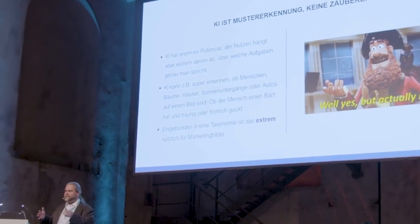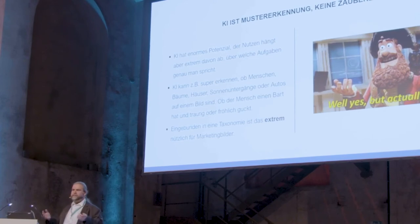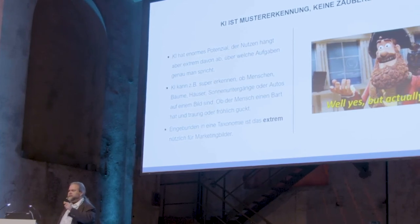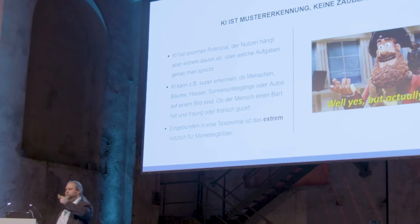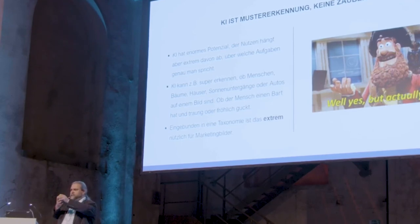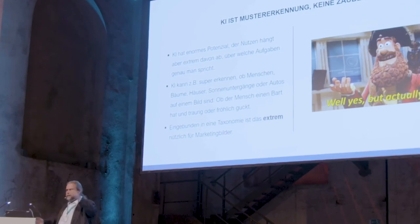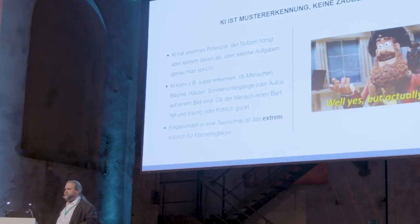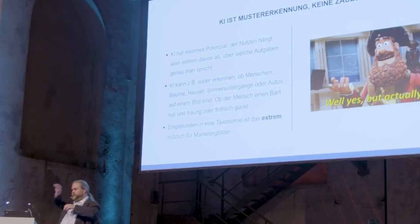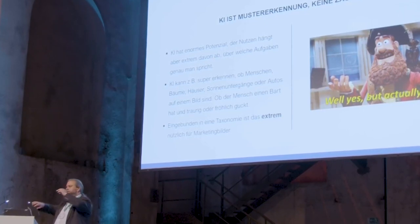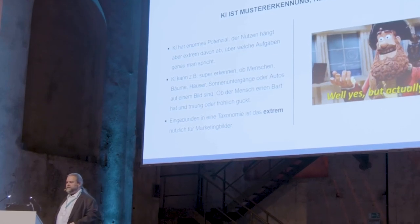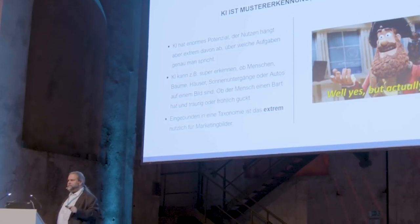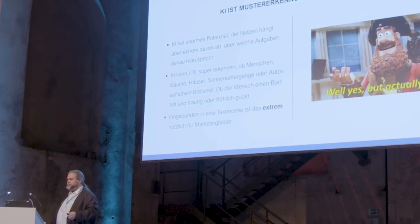Depending on what I want to do, AI can be great or not that great. Google Vision, for instance, is fantastic — it can tell me this is an image of a tree with a couple underneath and the guy is smiling and has a beard. If you put it into a taxonomy — a hierarchical structure of words — it's really cool. It identifies the Golden Gate Bridge, and being in a hierarchy, I know this is San Francisco, this is the USA, this is North America. If I search for North America or San Francisco, I automatically get the image even though the image itself is not directly referenced.